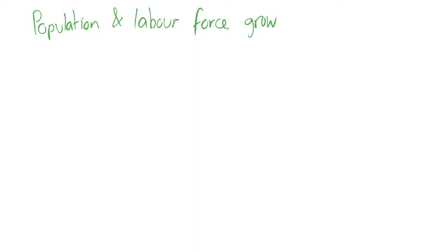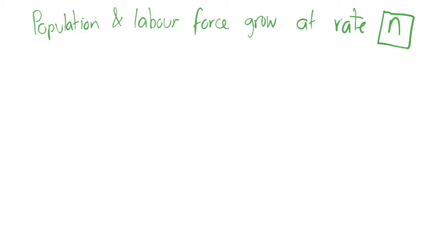Previously in our examination of the Solow growth model, we've assumed that the population and also the labour force is just constant — there is no growth. We're now going to change that such that the population and labour force grow at rate n. Population growth n is constant, so we're constantly growing at this same rate n, and this is exogenous — it's just a parameter given outside of the model.